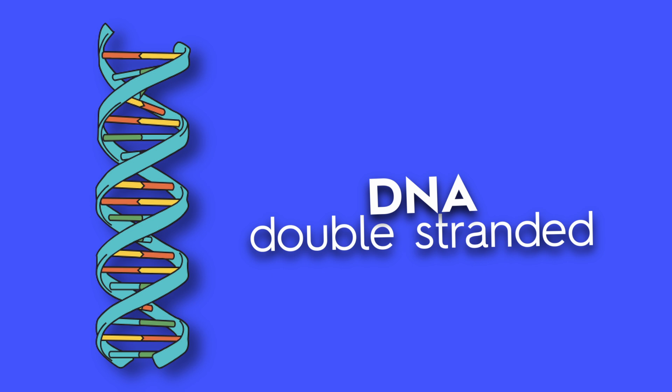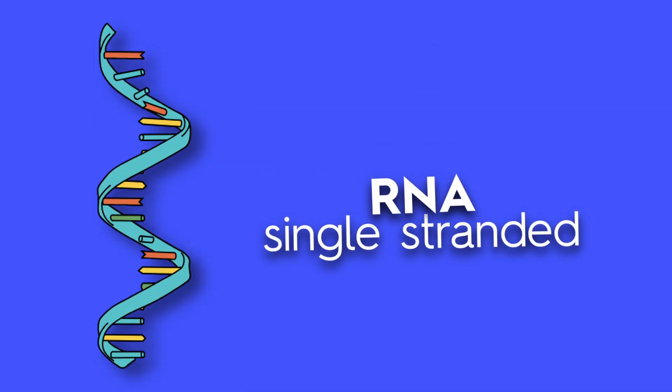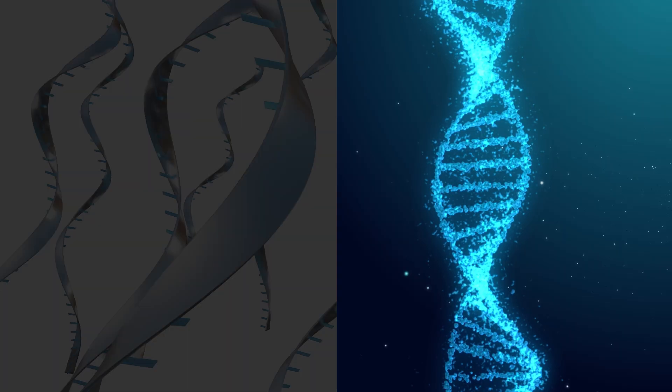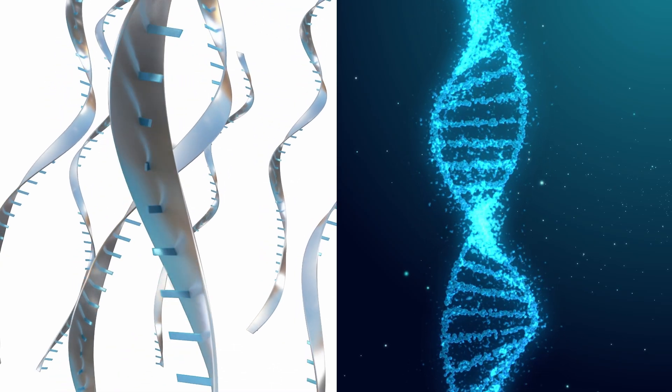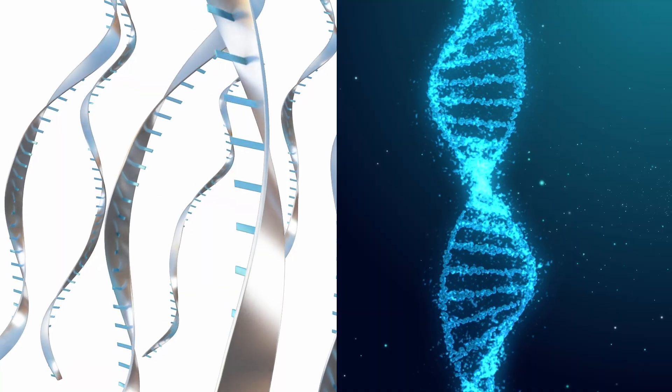So, to recap, DNA is double-stranded, stable, and stores the genetic blueprint in the nucleus. RNA is single-stranded, temporary, and works in the nucleus and cytoplasm to turn that blueprint into proteins. Together, DNA stores the plan and RNA carries it out. That's teamwork at the molecular level.